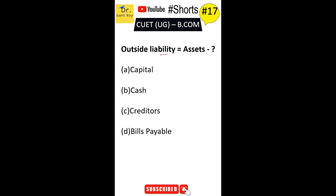Outside liability is equal to assets minus dash. Option A capital, Option B cash, Option C creditors, Option D bills payable. The correct answer is Option A — outside liability is equal to assets minus capital. When you subtract capital from assets, you get outside liability.